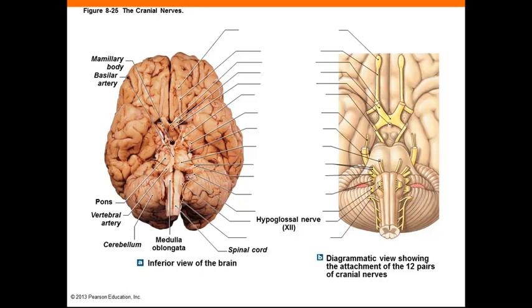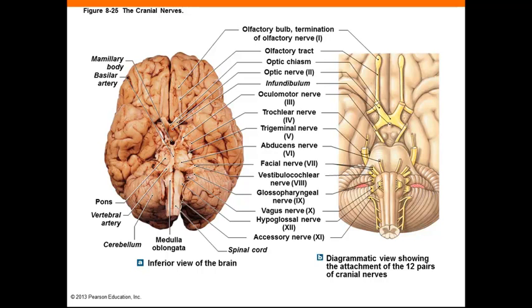The hypoglossal nerves, number 12, provide voluntary motor control over the tongue. Those are the 12 cranial nerves.